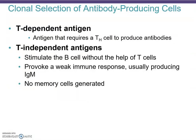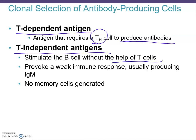As B cells respond, there are two different types of responses. One is to the T-dependent antigen, where the antigen requires a helper T cell interaction to produce antibodies. The T-independent antigen stimulates B cells without the help of helper T cells — that's usually a weak immune response. Importantly, with T-independent antigens, no memory cells are generated, which is not what you want. You want to have memory cells after all the work put into making the right antibody.